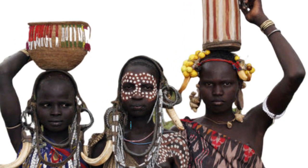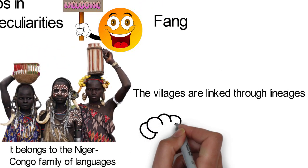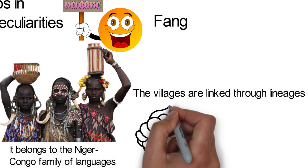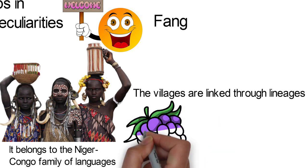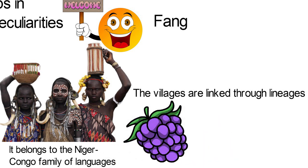The villages are linked through lineages. Polygamy is practiced among the Fang. They are also an exogamous society, which means they often marry outside their clans. The Fang are quite famous for their knowledge of animals, plants and herbs.